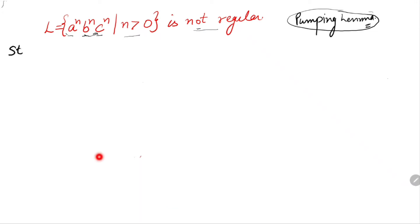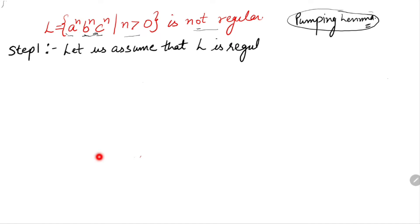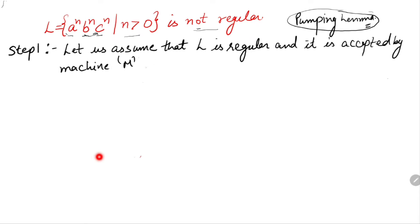To do this we will use the pumping lemma. As per the pumping lemma proof, step 1: let us assume that the given language L is regular and it is accepted by a finite machine M which has n number of states. So we have a machine M with n number of states that accepts the language L, that is a^n b^n c^n. This is our assumption.